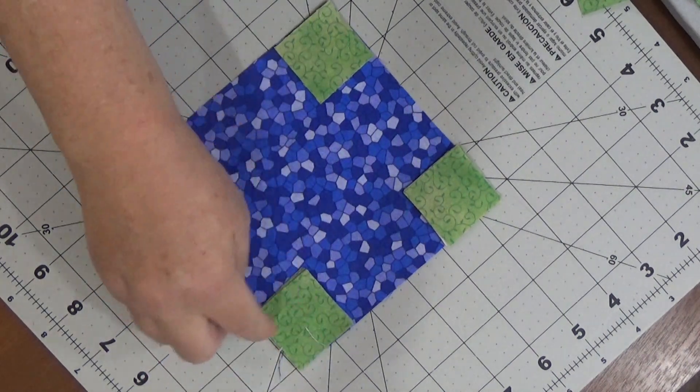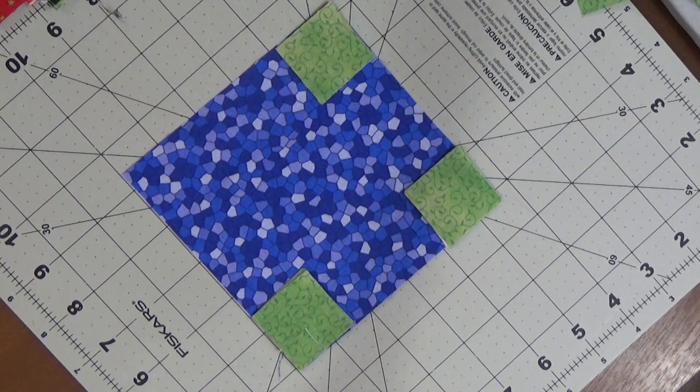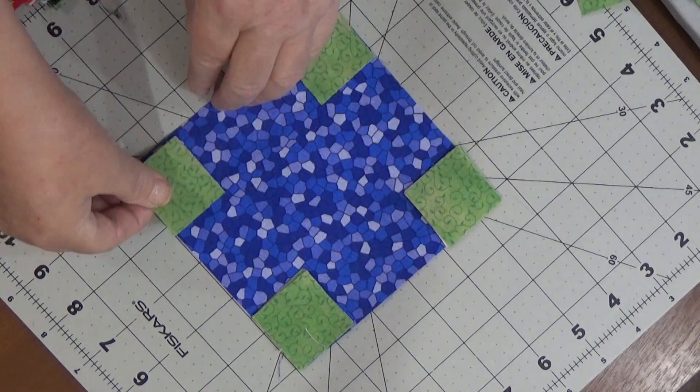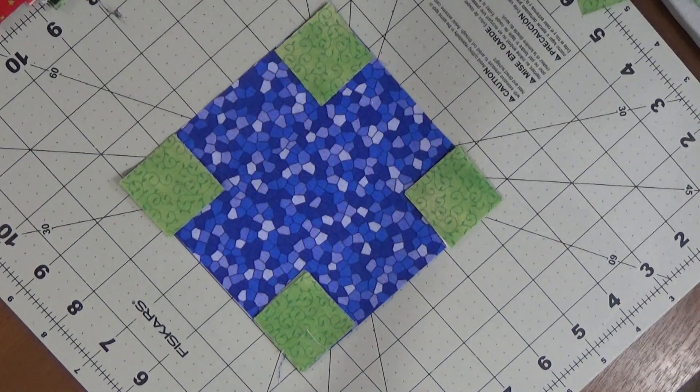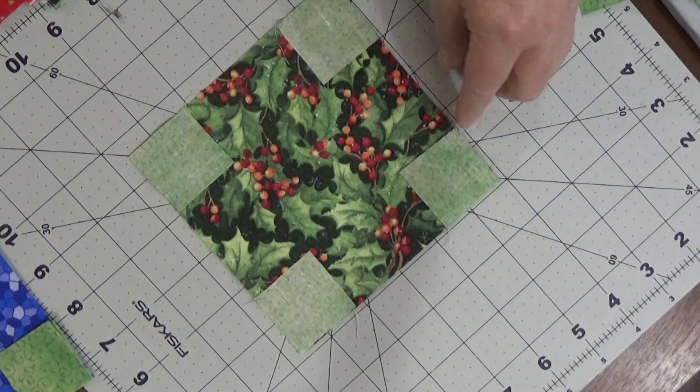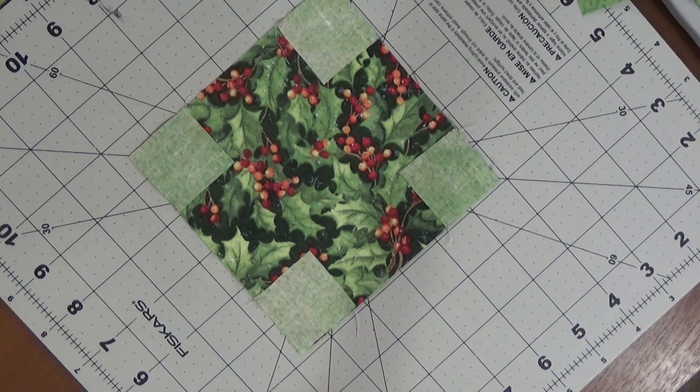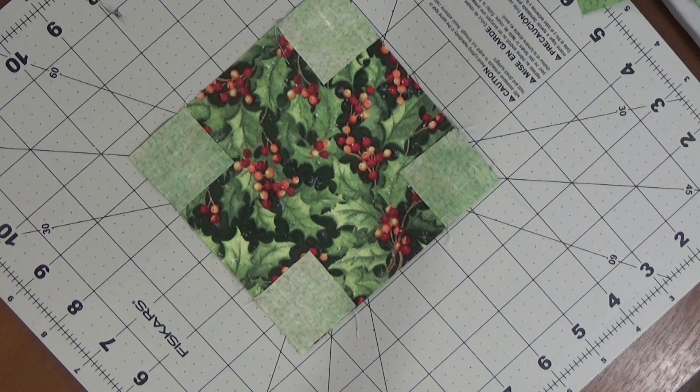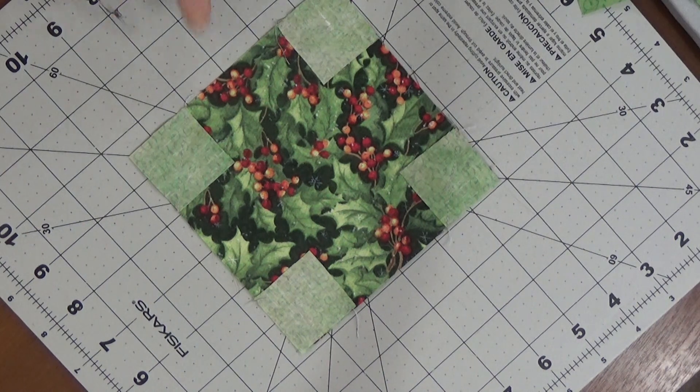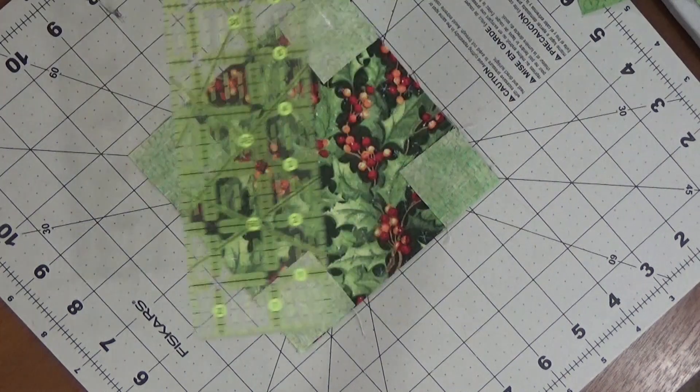And we're going to sew these down from corner to corner so that they look like this. For those of you who know me, I hope you're sitting down. I didn't pin these. Wild and crazy, huh? All right, so again we're starting out with a five and a half inch block. We have sewn down one and a half by one and a half inch blocks.